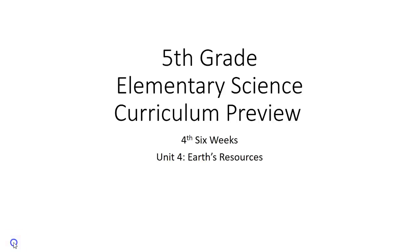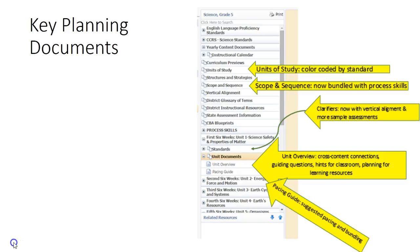Hello and welcome to the fifth grade science curriculum preview. This is for the fourth six weeks and today we're going to talk about Unit 4, Earth's resources. As always, we're going to be referring to a couple of key planning documents, so you might want to have these printed out or open them in another window. We're going to be talking about the pacing guide, some pieces in the unit overview, and the vocabulary on the clarifiers.